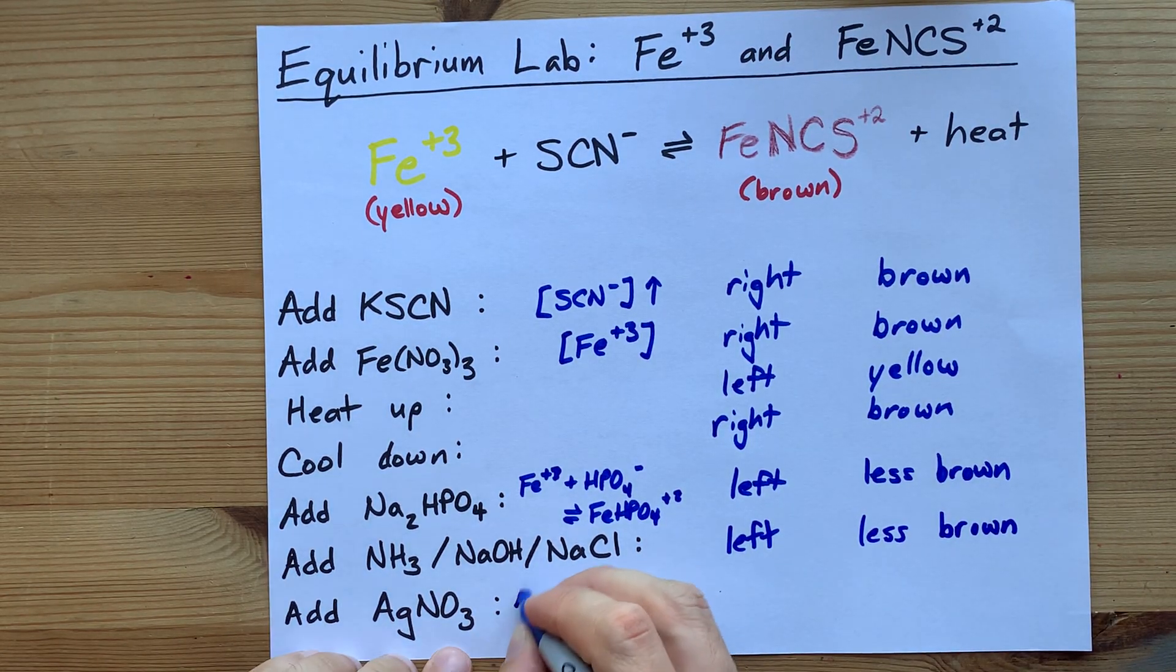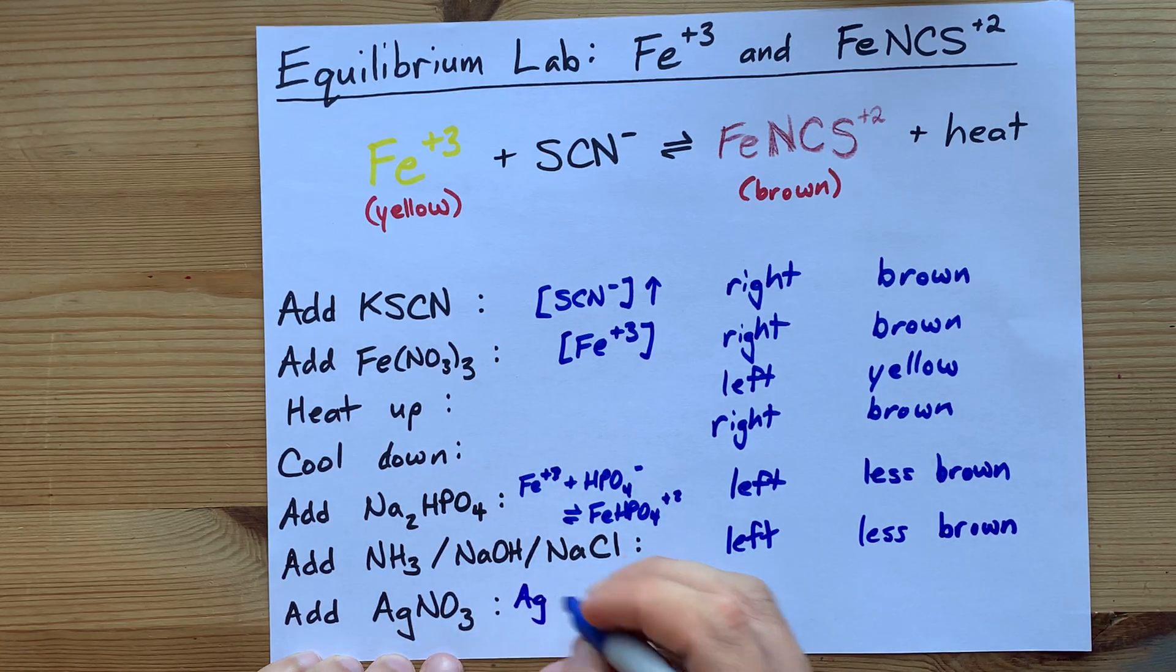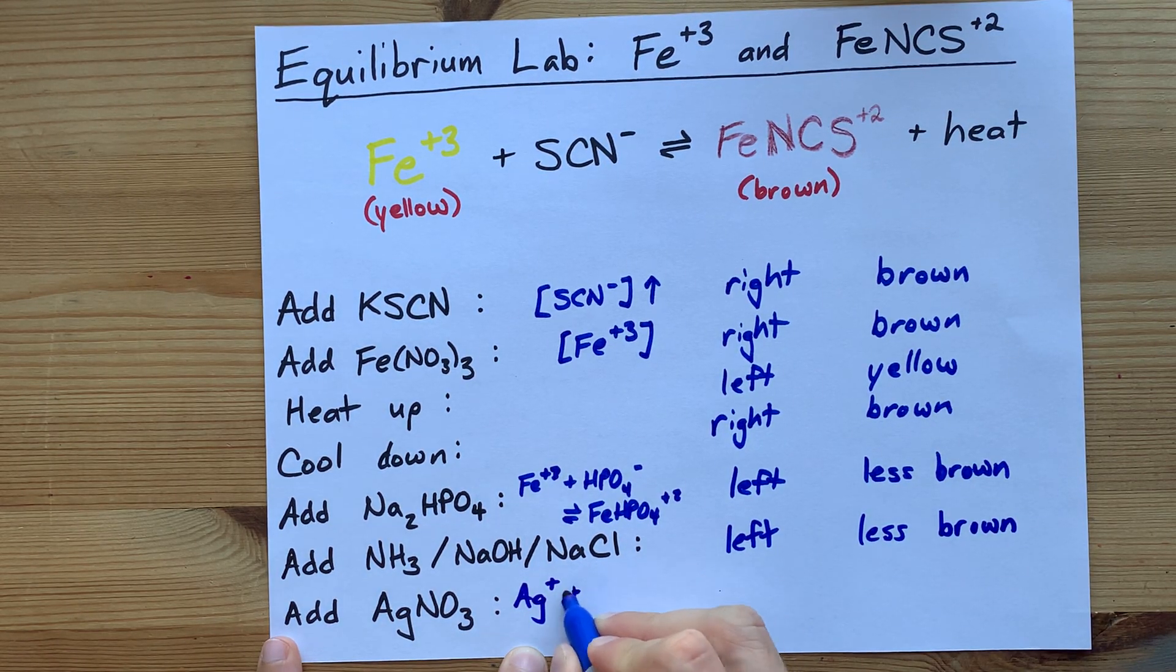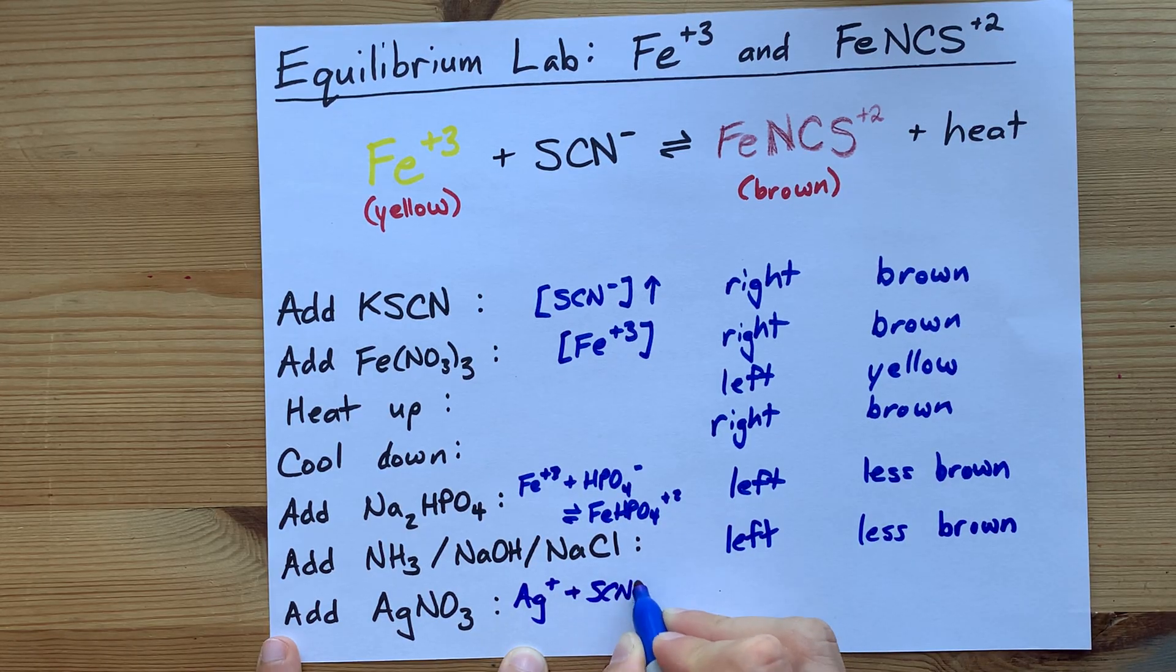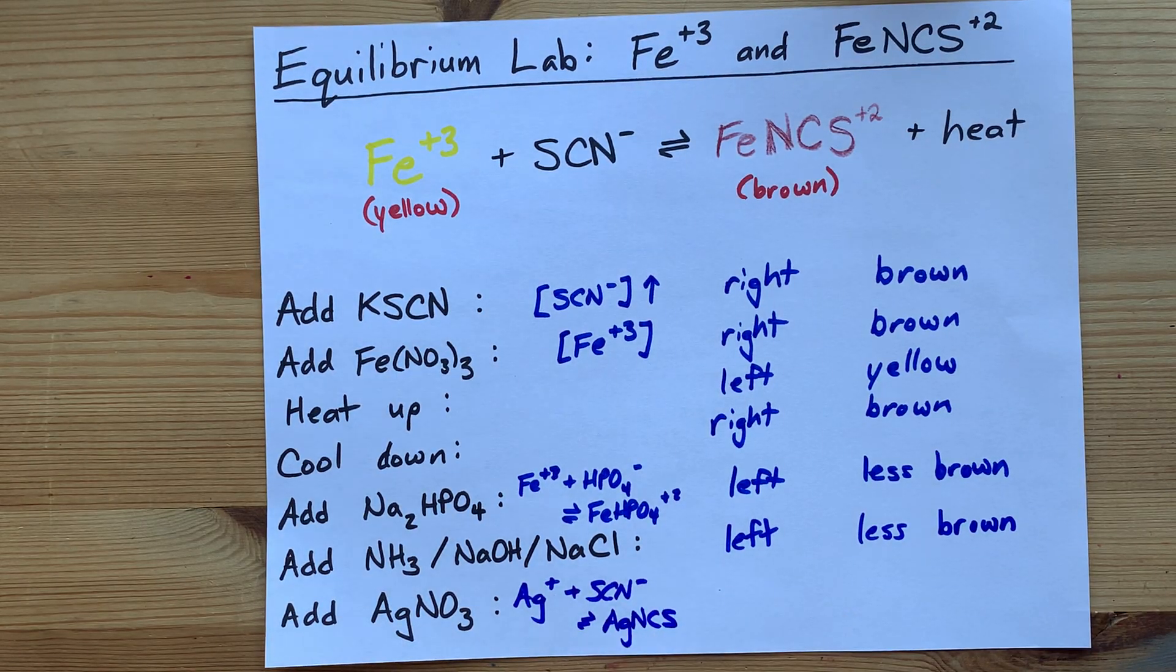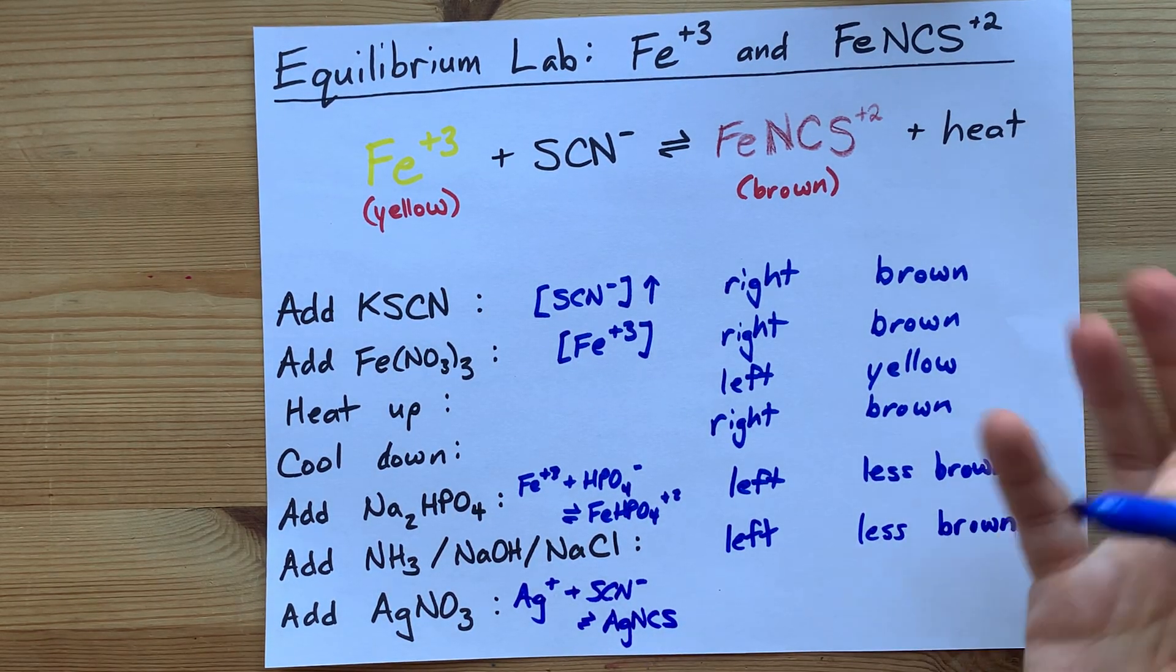And similarly, AgNO3 will dissolve to give you Ag+, but Ag+ will react with SCN to create a complex of its own, like AgNCS. Maybe that's actually a solid. Maybe it's AgSCN. I don't know.